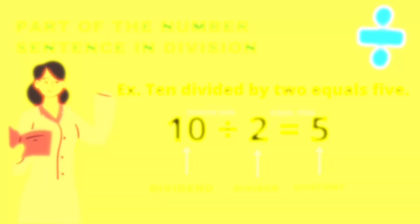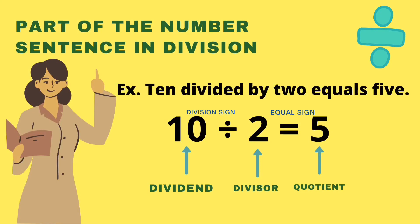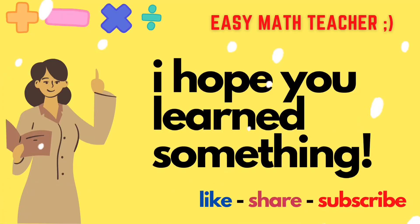Let us study the parts of the number sentence in division. Ten divided by two equals five. Ten is the dividend, two is the divisor, and five is the quotient. Ten divided by two means we have to split ten into two equal parts.